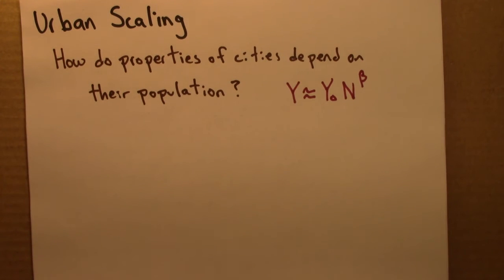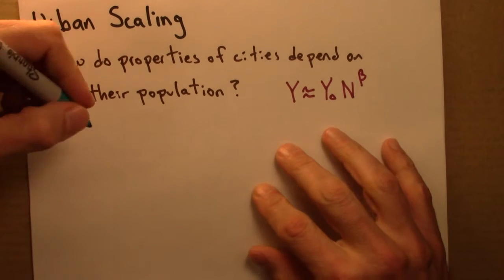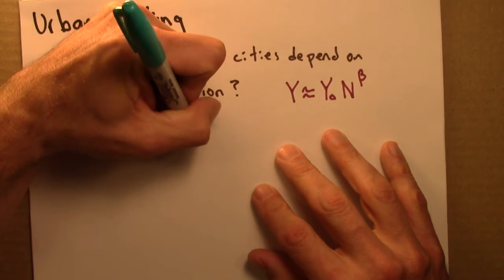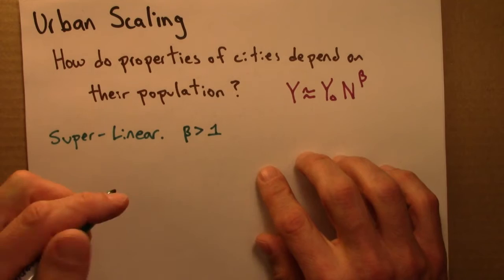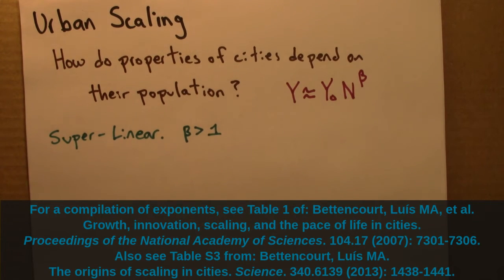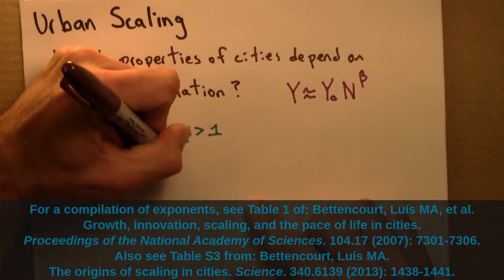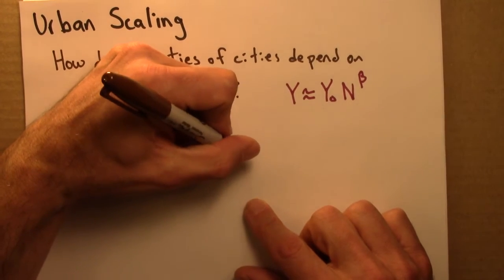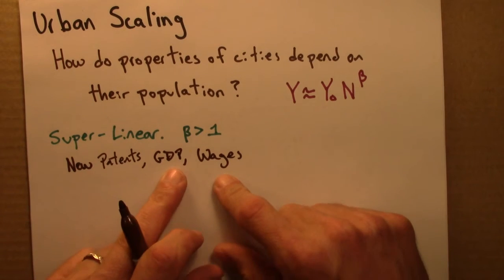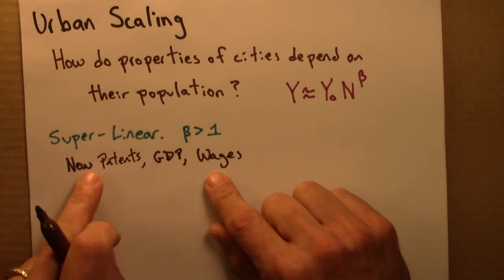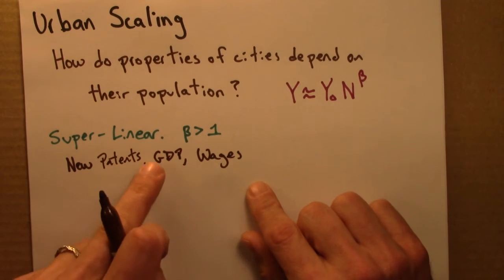It turns out that properties cluster into three different types. Some quantities scale super-linearly, meaning a beta greater than 1. Examples of those types of quantities are things like new patents, GDP, and wages. These are all things that grow faster than linear, so there's some increasing returns to scale — cities become more productive, more creative. The number of patents more than doubles if you double the city size; GDP more than doubles, and so on.